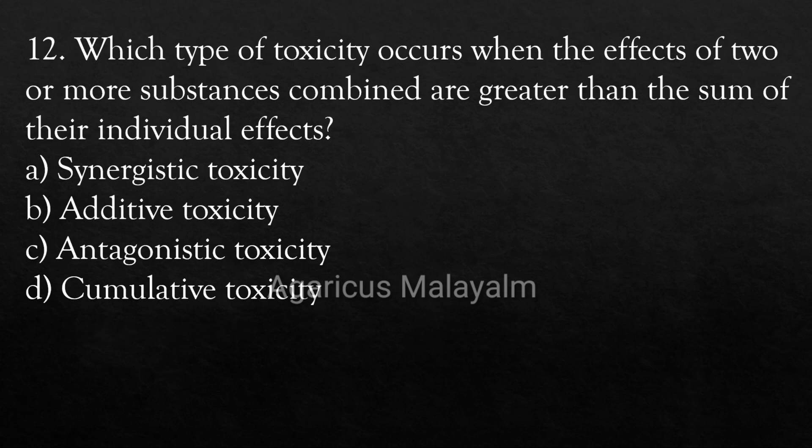Question 12: Which type of toxicity occurs when the effect of two or more substances combined are greater than the sum of their individual effects? Option A: Synergistic toxicity, Option B: Additive toxicity, Option C: Antagonistic toxicity, Option D: Cumulative toxicity. Correct Answer: Option A — Synergistic toxicity.